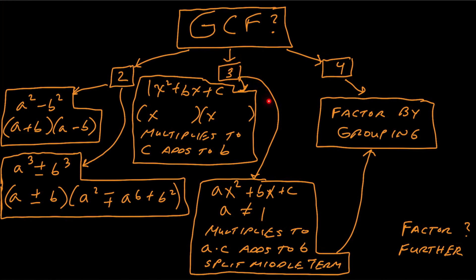The other option, when you have three terms and that leading coefficient a is not one, is to do something called splitting the middle term and factoring by grouping. You take the leading coefficient a, multiply it by the constant c — we call that ac. So you ask: what multiplies to a times c, but adds to the middle coefficient b? Then you split the middle term, giving you four terms, so that you can factor by grouping. This is a more process-oriented way of doing it.